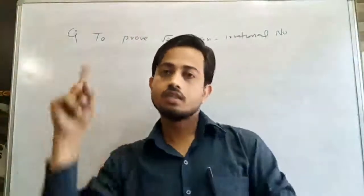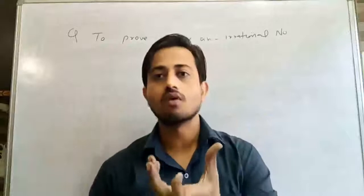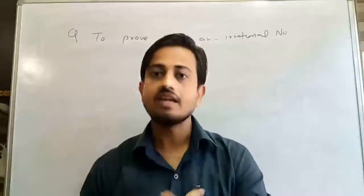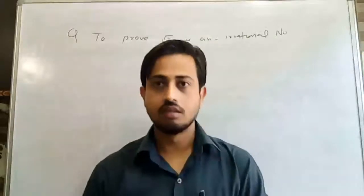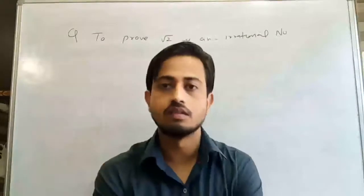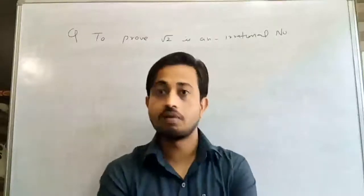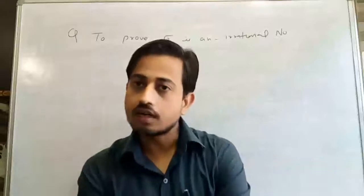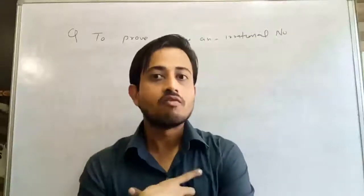Our question is to prove square root of 2 is an irrational number. We are using the method of contradiction. We know rational and irrational numbers are both parts of the real number system. If the number is not rational, it must be irrational. So we assume square root of 2 is a rational number, then prove our assumption is wrong.